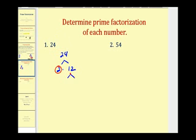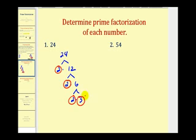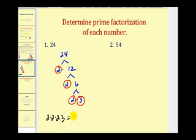We'll break down twelve into two times six — again we'll circle two since it's prime. And then lastly we can break down six into two times three, which are both prime. So the prime factorization of twenty-four would be two times two times two times three, or using exponents, two to the third times three.